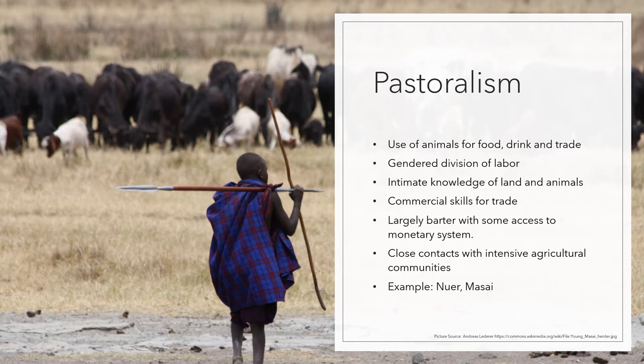In pastoralist societies, men and women have more commercial skills because they engage in trade with other kinds of societies much more often. It is largely based on barter, but they are also involved in the monetary system. They tend to have close contacts with intensive agricultural communities — they're kind of specialized, so they need to get agricultural goods from somebody else. Good examples of these societies are the Nuer and the Maasai, both in Africa. This is a picture of a Maasai herdsman who's watching his herds with a shepherd's crook and a spear — because in Kenya, one of the problems is lions.